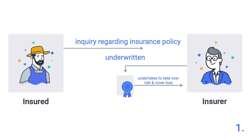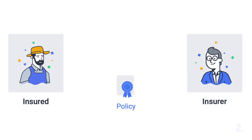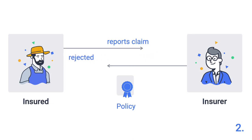In case of acceptance, the contract comes to the underwriter. The acceptance of the application is called underwriting. The insurance company commits itself with the underwriting to take over the risk of the customer and transfer it to itself. It further undertakes to cover the loss if the insured event occurs. The customer, for his part, undertakes to pay the premium. Both declarations of obligation are documented in a contract called a policy. Now, if a claim occurs, the customer reports it to the insurance company. The claim is checked and accepted or rejected. In case of acceptance, the agreed insurance sum is paid out.